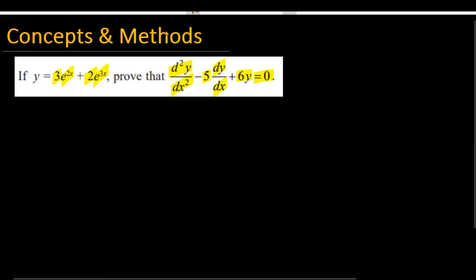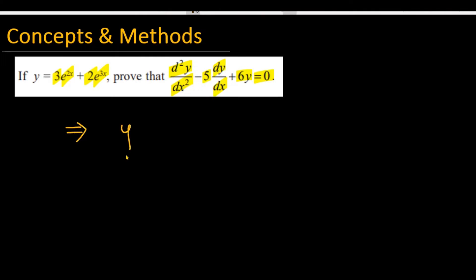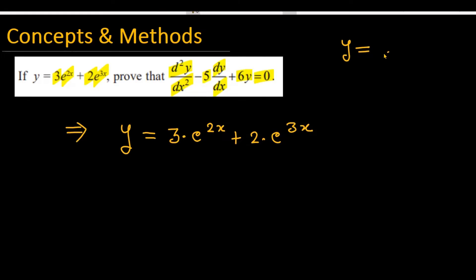Let's see how we are going to solve the given problem. The given equation is y = 3e^(2x) + 2e^(3x). Note that if you have a function e raised to the power ax and you differentiate it, the result is a times e raised to the power ax.